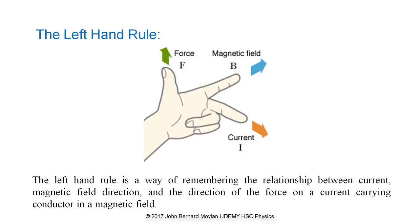The left hand rule. There are several different versions of this rule, using either the left or right hands, with different parts of the hand representing different components of the force, current, and magnetic field direction. The important thing is to stick to one version — the one you find most memorable. The classic left hand rule, which is illustrated, has the thumb representing the force F, the index finger representing the magnetic field direction B, and the middle finger representing the current direction I. This can be remembered as FBI.